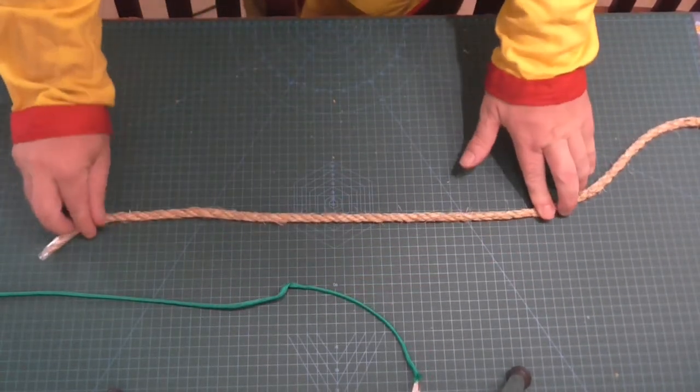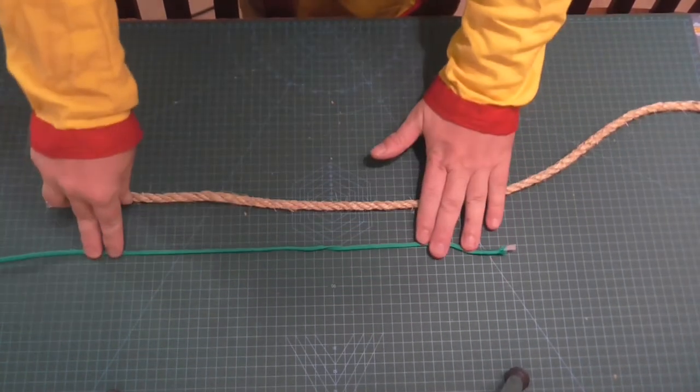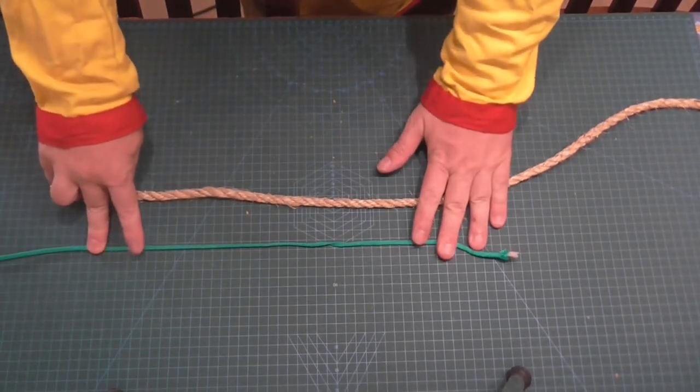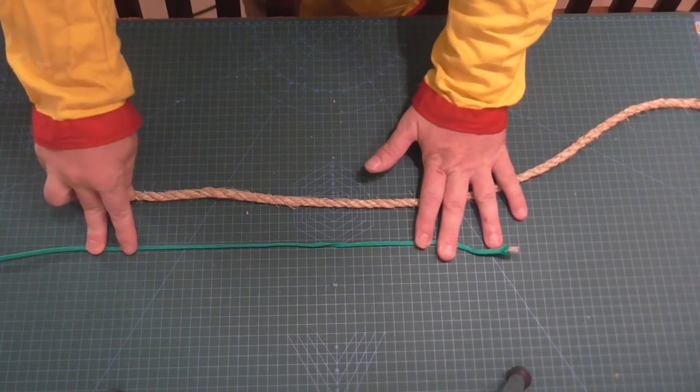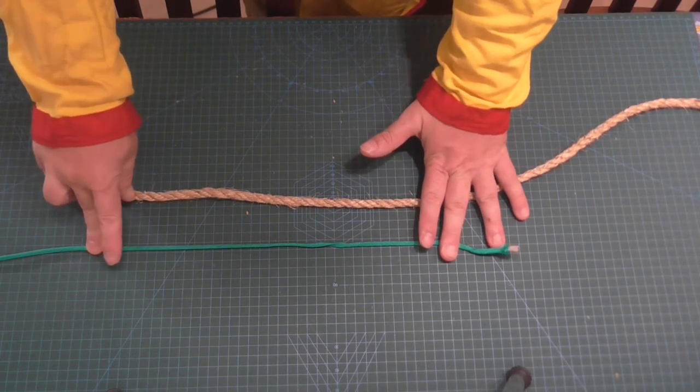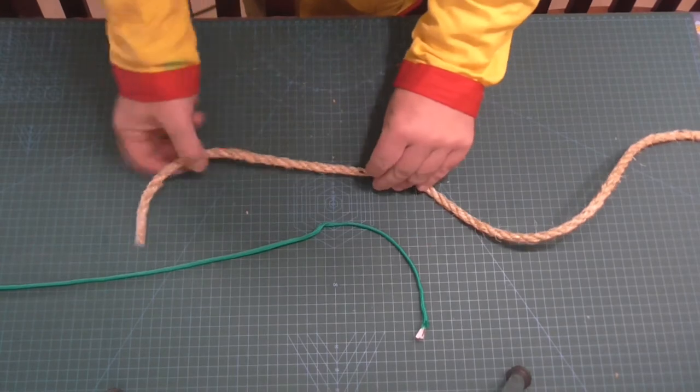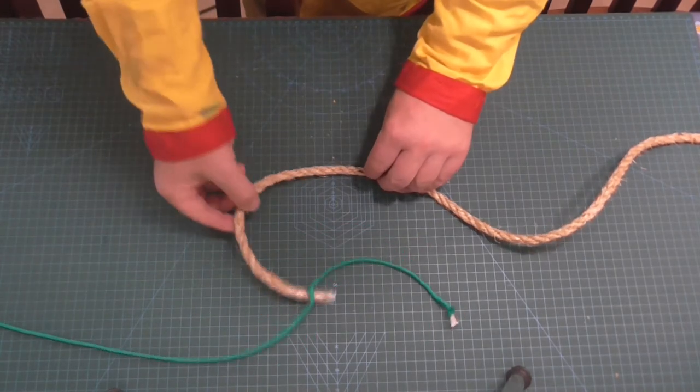It's used for joining two different thicknesses of rope. Now I'm using a green piece of nylon cordage. This is actually 550 or also known as paracord and this particular one is a natural fiber rope.